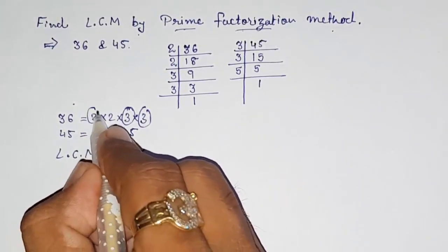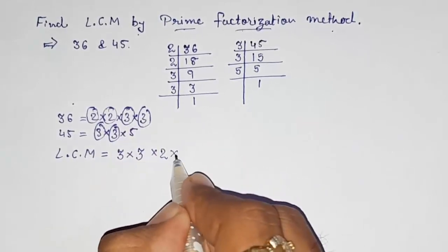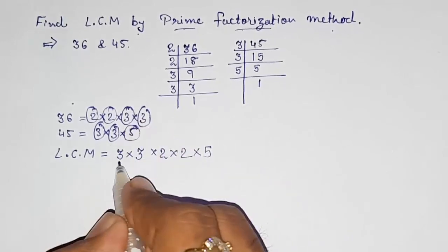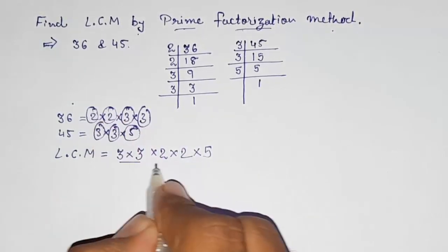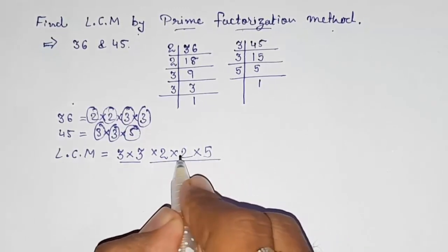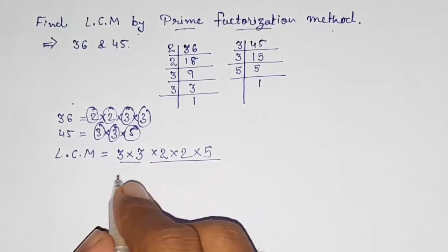we have to take one by one. Now 2, this is also remaining, 2, and this is the last number that is 5. First we select the common numbers, then the remaining ones we write down. Now we have to multiply all this: 3 times 3 is 9, 9 times 2 is 18, 18 times 2 is 36, 36 times 5 is 180.